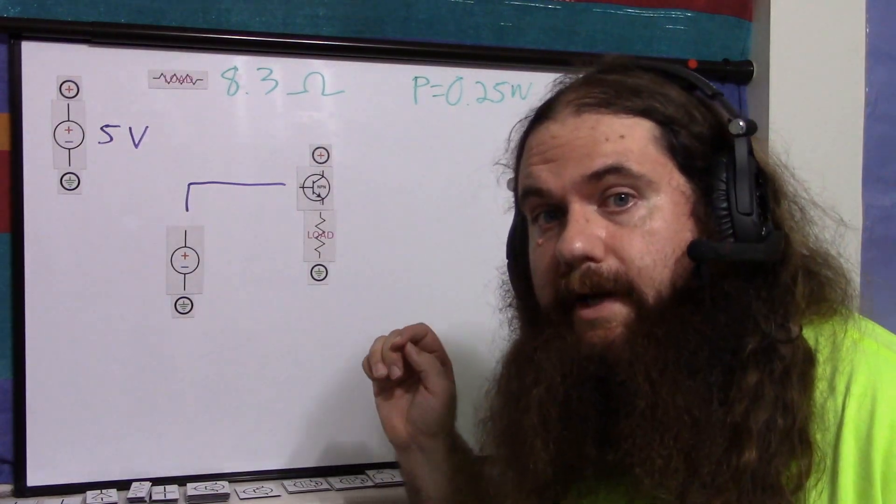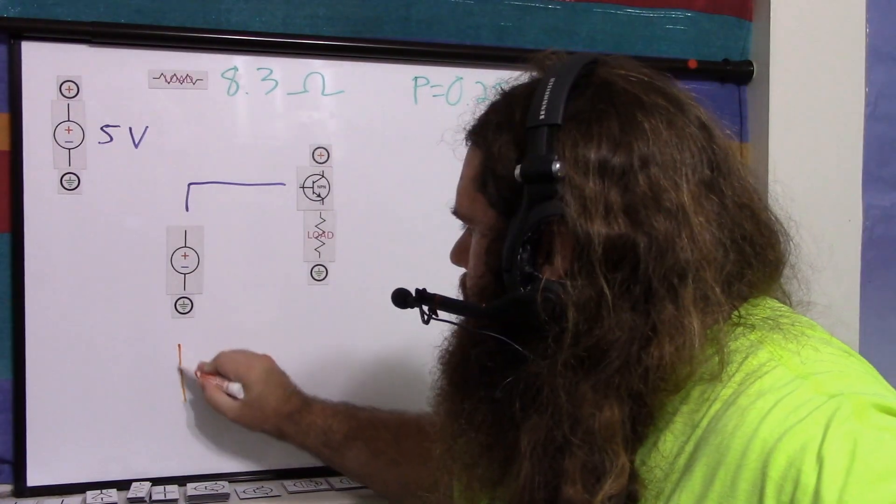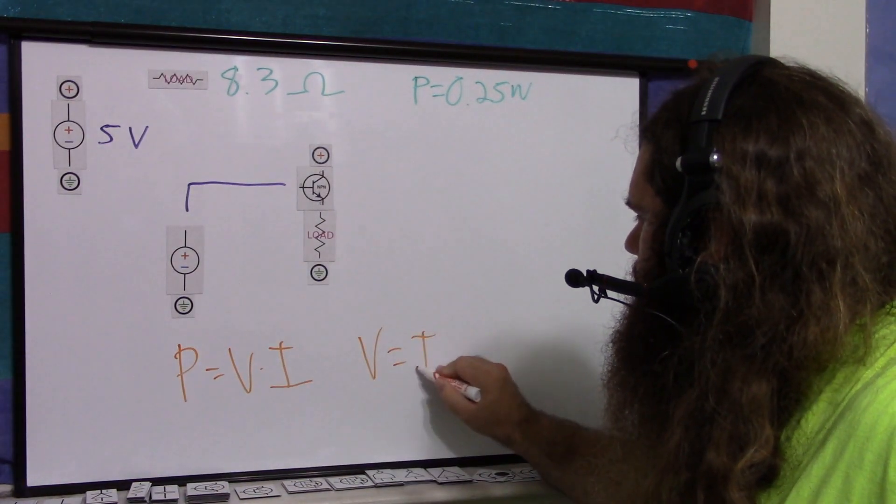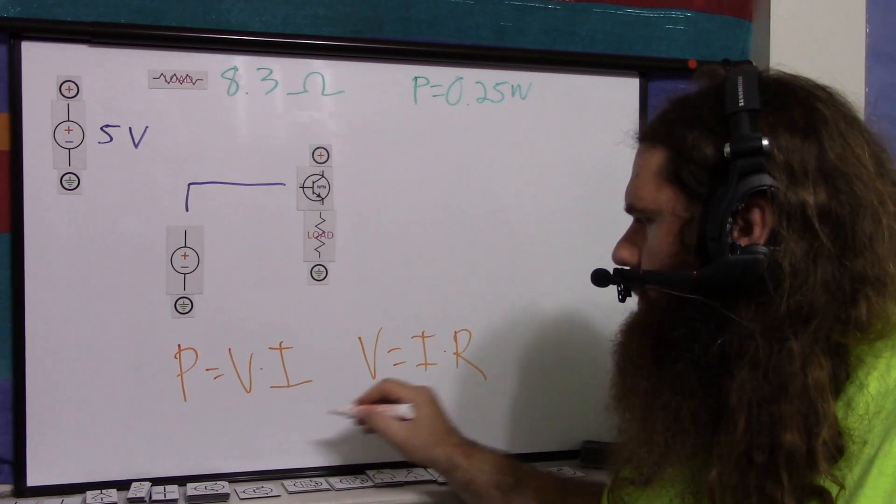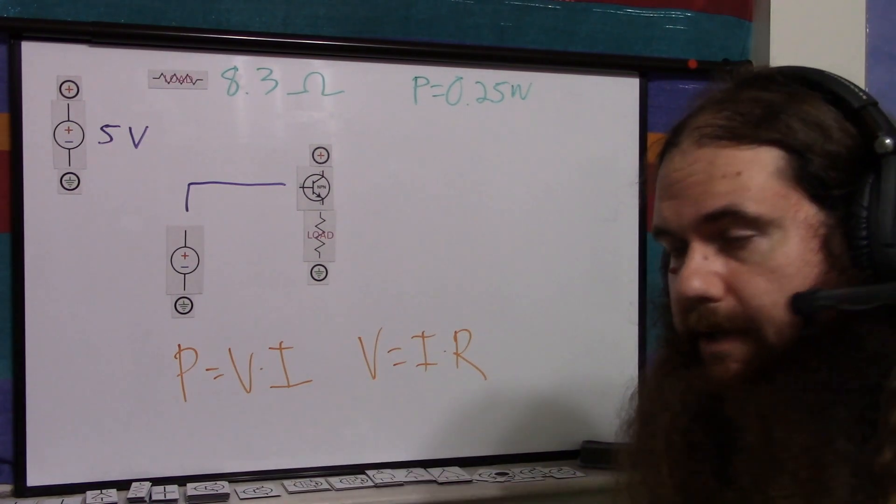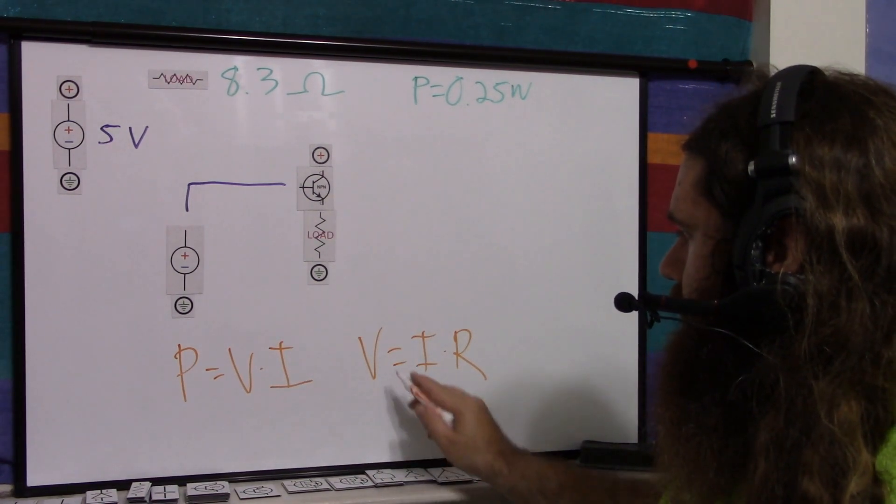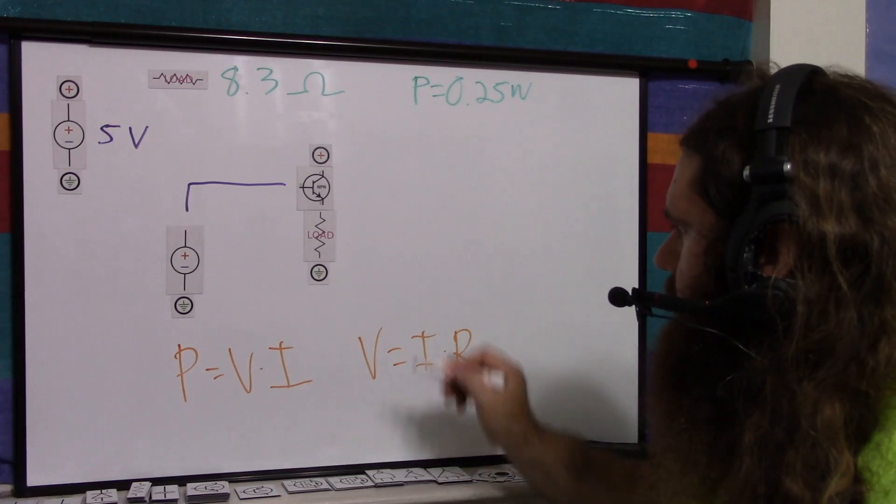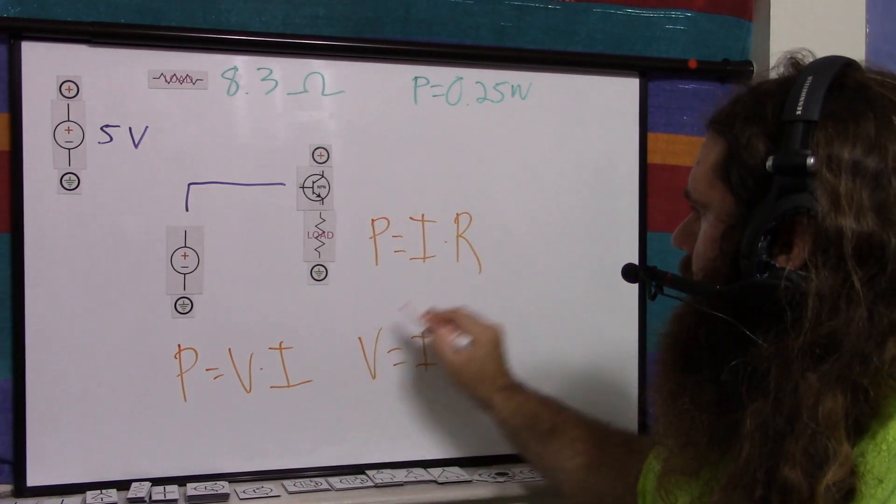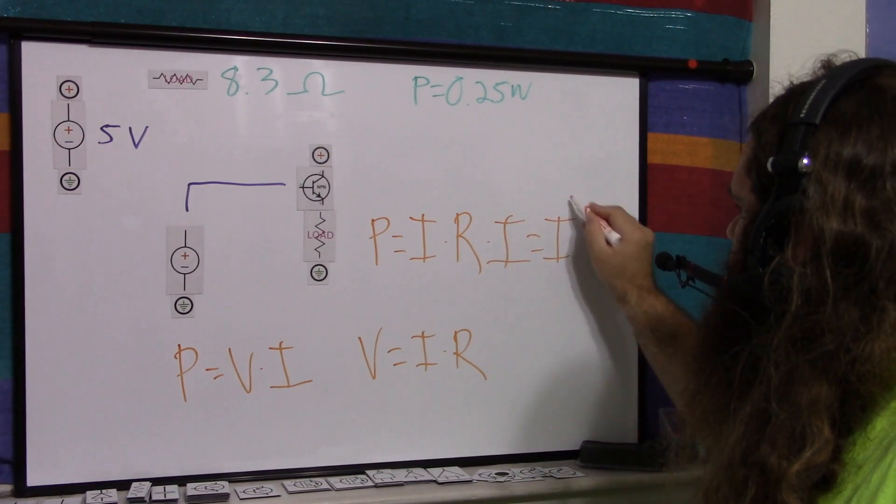Simple equations. Power equals voltage times current. Voltage equals current times resistance. Joule's law, Ohm's law. We know power. We know resistance. We don't know current and we don't care about voltage. So we want to get rid of voltage. Well, here's voltage. Let's substitute it in. Power equals current times resistance times current, which is current squared times resistance. So now we've gotten rid of voltage.